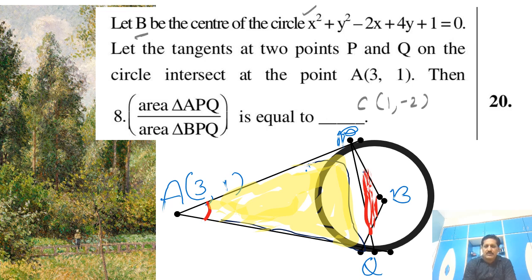Radius will be equal to √(1 + 4 - 1), radius will be equal to 2 units. So center is 1 comma -2, radius is given by 2 units.